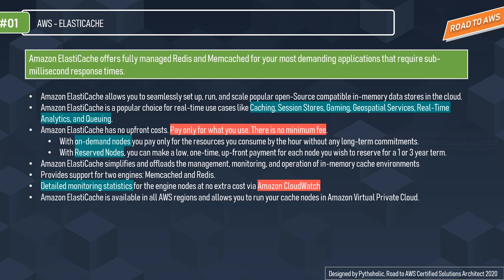ElastiCache provides support for two engines: Memcached and Redis. It provides detailed monitoring statistics for each engine node at no extra cost via Amazon CloudWatch. Amazon ElastiCache is available in all AWS regions and allows you to run your cache nodes in Amazon VPC. Let's check a very important concept about cache memory in terms of databases.